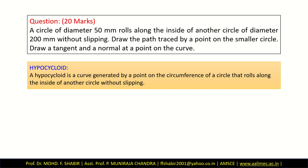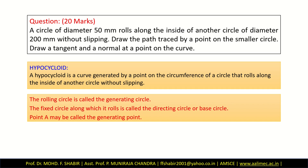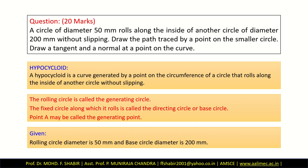Definition of hypocycloid: a hypocycloid is a curve generated by a point on the circumference of a circle that rolls along the inside of another circle without slipping. The rolling circle is called the generating circle. The fixed circle along which it rolls is called the directing circle or base circle. Point A may be called the generating point. Given data: rolling circle diameter is 50 mm and base circle diameter is 200 mm.